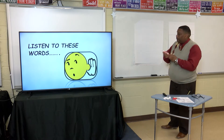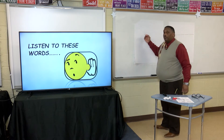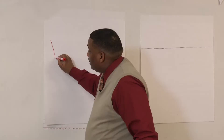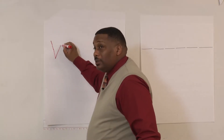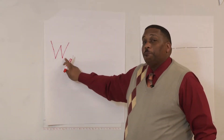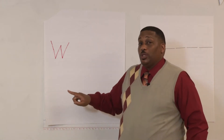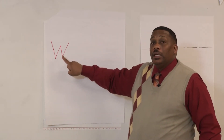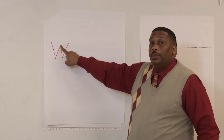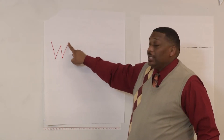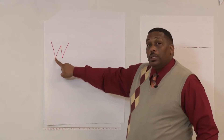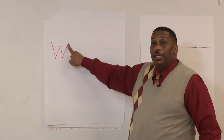Let's start with the letter W. To form the letter W, we simply slant it down, then go up, down again, and up. Let's trace it together: down, up, down, and up again. One more time: down, up, down, and up again.